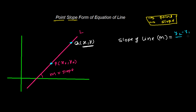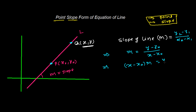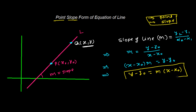So m equals (y2 - y1) / (x2 - x1). Taking one point as (x0, y0) and the other as (x, y), we get m = (y - y0) / (x - x0). Rearranging, (x - x0) × m = y - y0. So the final equation is: y - y0 = m(x - x0). This is the required equation of the line.